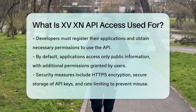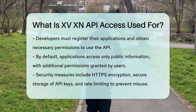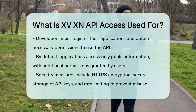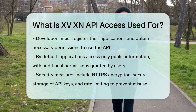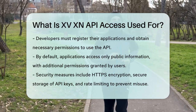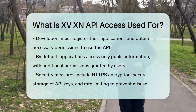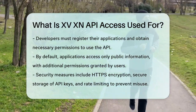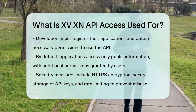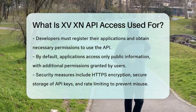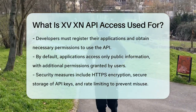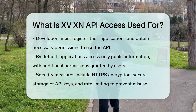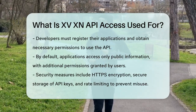Security is a top priority for X's API. The platform uses strict policies and processes to assess how developers use X data, and it restricts improper use. Developers must use HTTPS encryption, store their API keys securely, and implement rate limiting to prevent abuse.